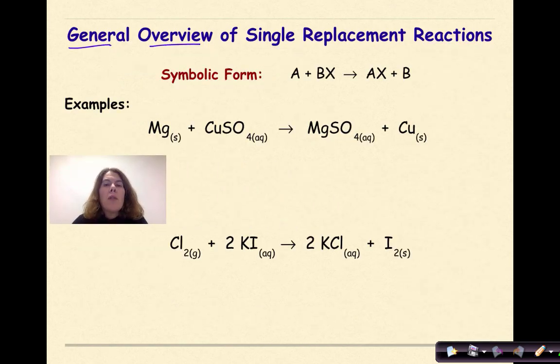General overview of single replacement reactions. Symbolically, we're looking at a situation where A plus BX yields AX plus B. So in other words, A is coming in as a more active element and kicking out B. So B is now by itself, and A hooks up with X.